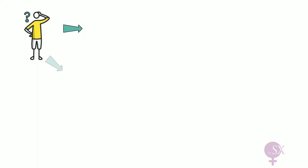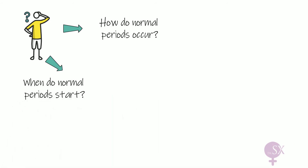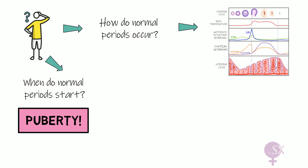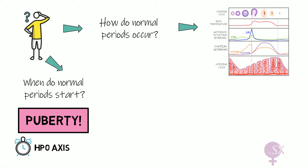Before we get into this, we first need to ask how normal periods occur and where normal periods start. It is vital to know the normal menstrual cycle — you can refer to my video on the menstrual cycle linked below. Normal periods start during puberty, which begins when the HPO axis wakes up. The HPO axis refers to the hypothalamic pituitary ovarian axis, which we will be referring to multiple times in this video.